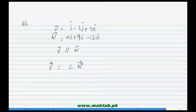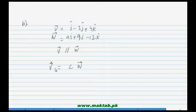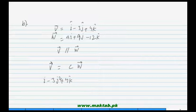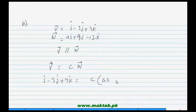Two vectors are parallel when they are scalar multiples of each other. So we multiply w by a constant c and it remains parallel to v. We put the value of v: v vector equals i-hat minus 3j plus 4k, equal to c times w, where w is ai plus 9j minus 12k.